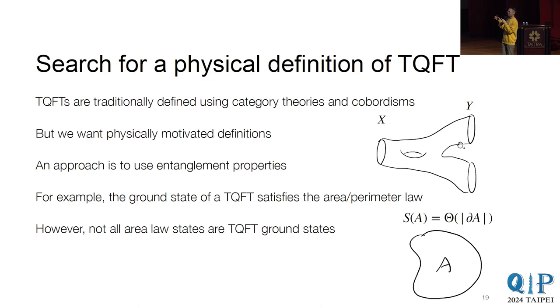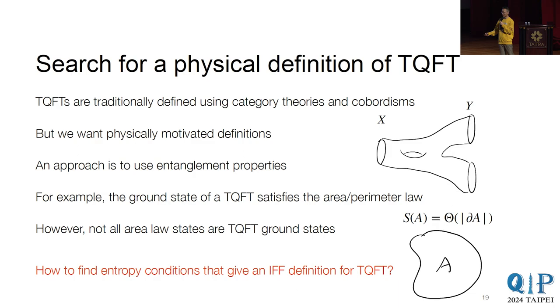So that's good. But one thing is that, okay, so on the left, we have TQFT. On the right, we have these area law. So we know that TQFT implies area law. But in fact, the reverse doesn't hold. So people know that there are area law states that are not TQFTs. But for us, we want to have a definition. So it's better be an if and only if condition. So the question is, how can we find some entropy conditions that gives you a definition of TQFT?